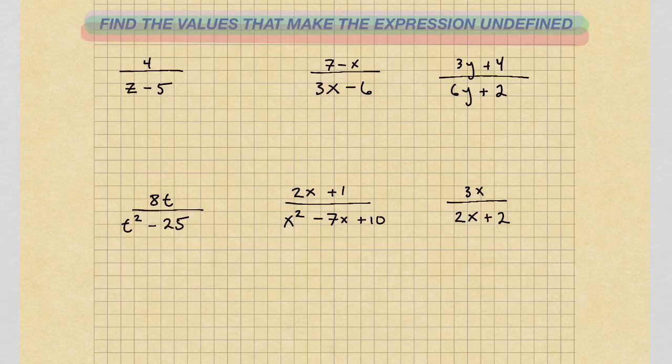Good day. I'd like to show you how to find values that make these expressions undefined. For an expression to be undefined, it means the denominator has to be equal to 0. So what we do is simply take these denominators and set them to 0, and then find the values that make that true.